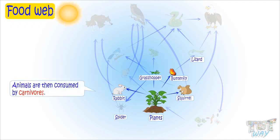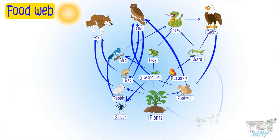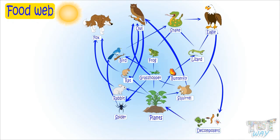Animals are then consumed by carnivores, and all animals when dead are decomposed by microorganisms like bacteria and fungi into nutrients that are again used by plants to make food and to breathe.